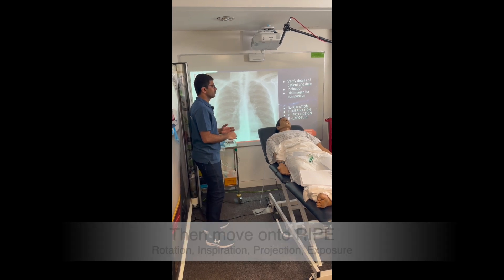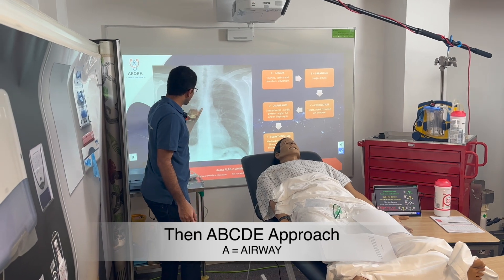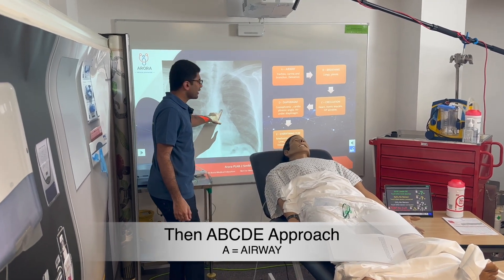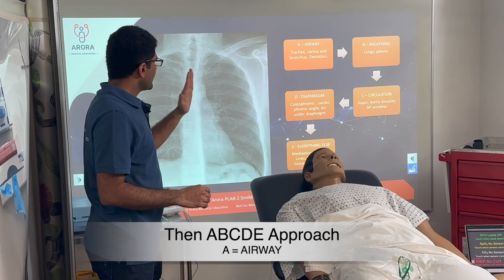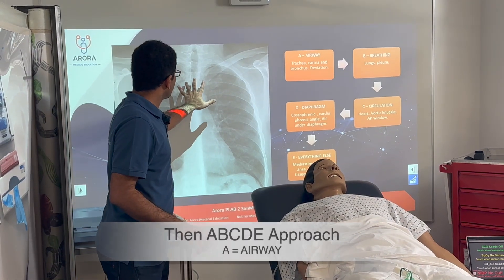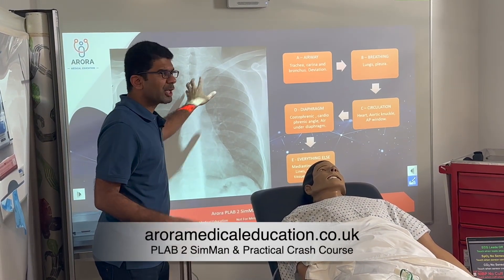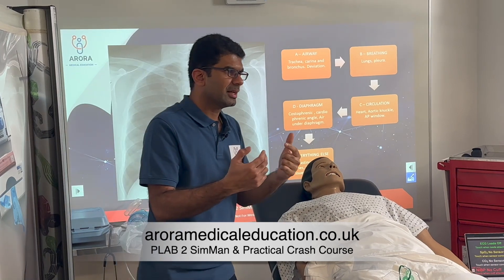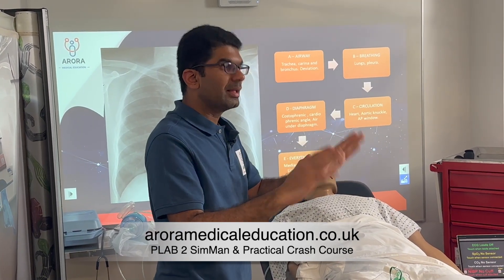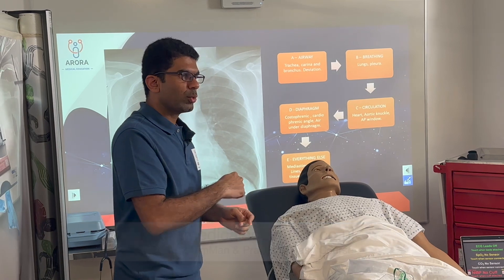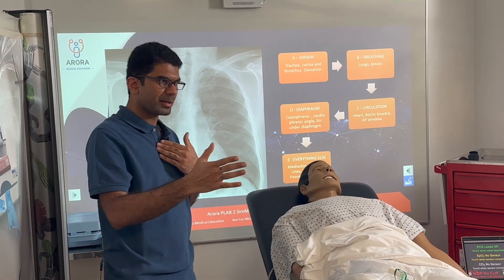A is your Airway. We look at the trachea, then the bronchus, and any deviations. We've already checked if the spinous process is equidistant from the medial end of the clavicles — if it is, we know the film is not rotated. Then you can comment on the trachea: whether it's midline or has been pushed or pulled to one side.